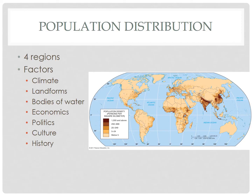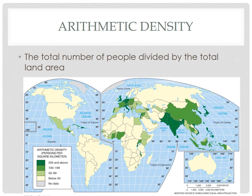Now let's look at some ways to better understand the relationship between population and the physical landscape. The first and most basic measurement is known as arithmetic density, sometimes called crude density or simply population density. Arithmetic density is the total number of people divided by the total land area. This metric tells us how crowded an area is, but it's known as crude density because it does not account for land that's difficult to live on or is uninhabitable, and it does not provide information about how clustered or dispersed a population is. The global arithmetic density is about 115 people per square mile, but numbers can vary widely by country.